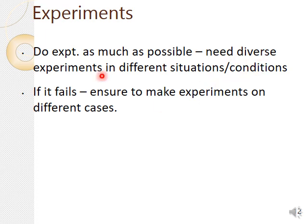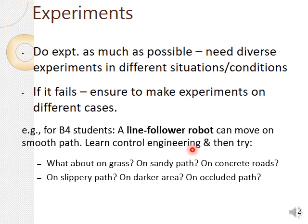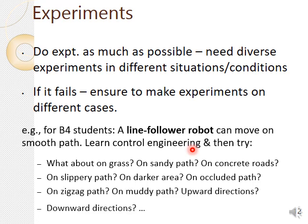Do experiments as much as possible — diverse experiments in different situations and conditions. If you have real data, that is best. If not, go for artificial or simulated data. If experiments fail, make sure to try different cases. For example, a line-following robot may work on a smooth path, but try it on grass, sandy paths, concrete, slippery surfaces, darker areas, occluded or muddy paths, and upward or downward directions.